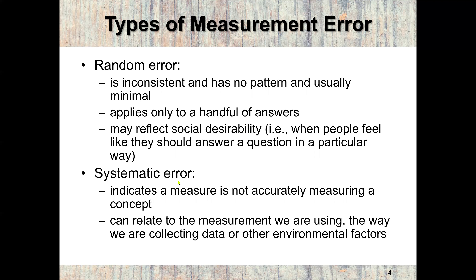The second error is called systematic error. Systematic error normally indicates that a measure is not accurately measuring a concept. This can relate to the measurement we are using, the way we are collecting data, or other environmental factors. Going to a predominantly Democrat or Republican area to measure support for a bill is an example of systematic error. Random error occurs inconsistently with no pattern and is usually minimal, while systematic error is very common.